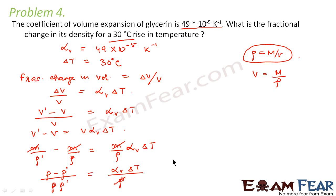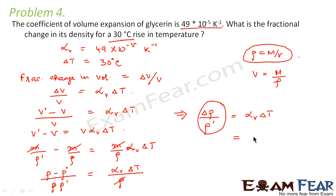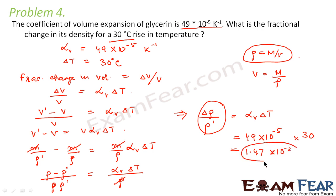This is nothing but the fractional change in density. So the fractional change in density equals alpha V times delta T, which is 49 times 10 to the power minus 5 per Kelvin multiplied by 30 degrees Celsius. This comes out to be 1.47 into 10 to the power minus 2. So this is the fractional change in density for glycerin.